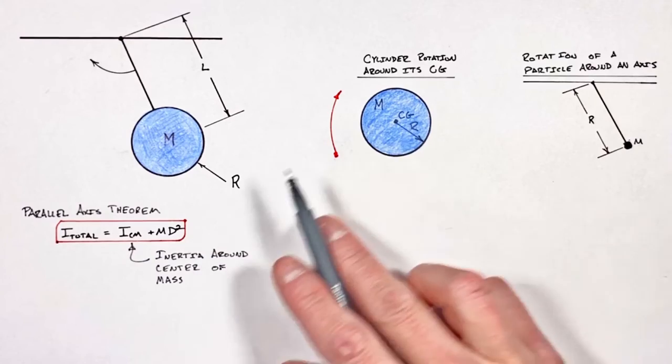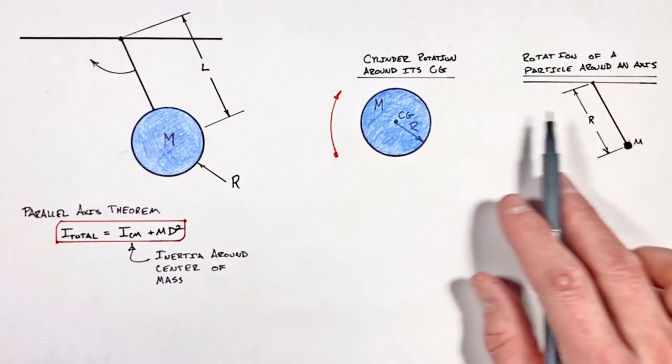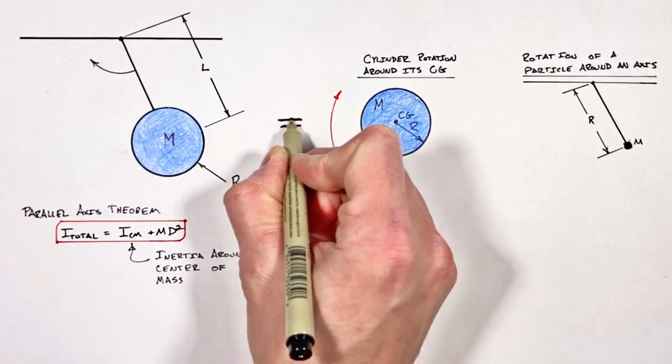the rotation of this wheel around its center, as well as the rotation of a point mass on the end of a lever.